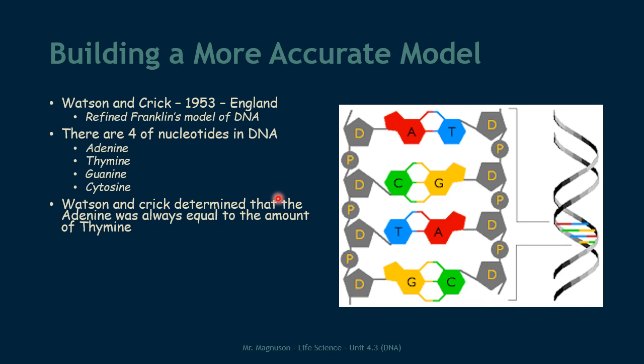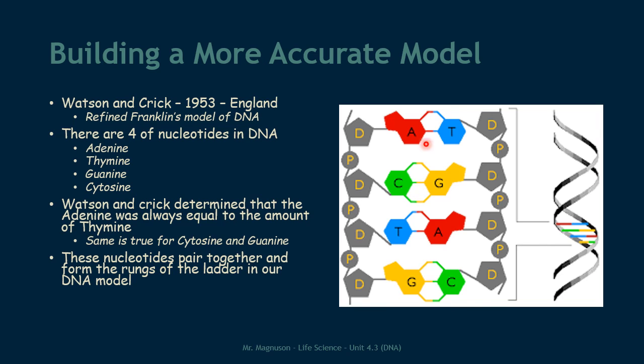So Watson and Crick were able to perform experiments in which they were able to determine how much of each nucleotide was in a given DNA strand. And something that they figured out: the amount of adenine was always equal to the amount of thymine, and the amount of guanine was always equal to the amount of cytosine. So they performed an experiment, they analyzed their results, and these are the conclusions that they were able to draw. What they figured out is that the nucleotides can only go together in a specific way to make this double helix, to make this twisted ladder. What they figured out is that adenine will always connect to thymine. So if we look at the rungs of the ladder or the nucleotides that make up the ladder, A will always attach to T, and cytosine will always attach to guanine.